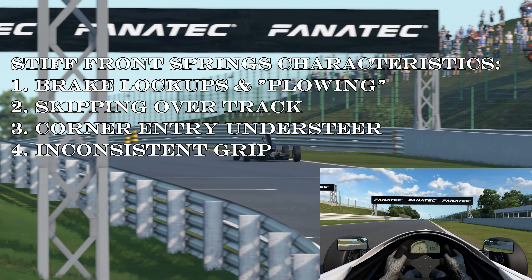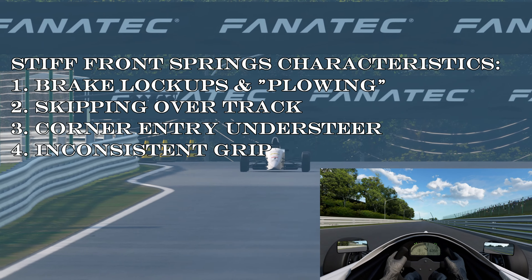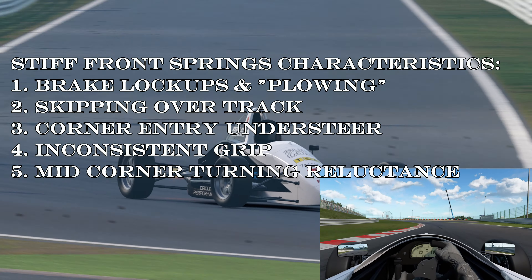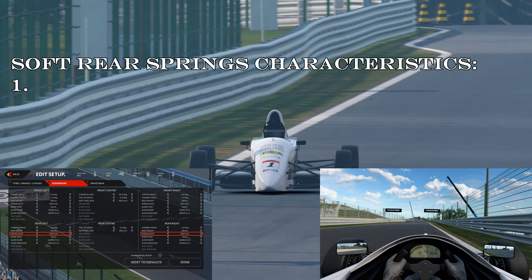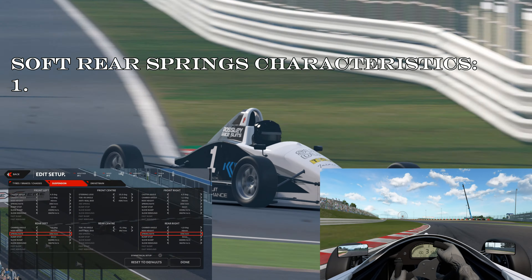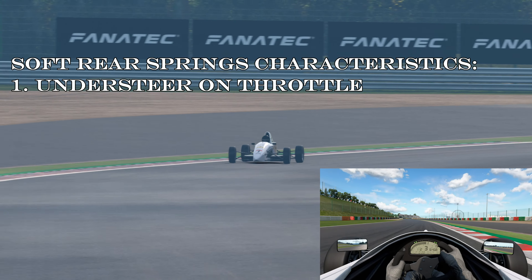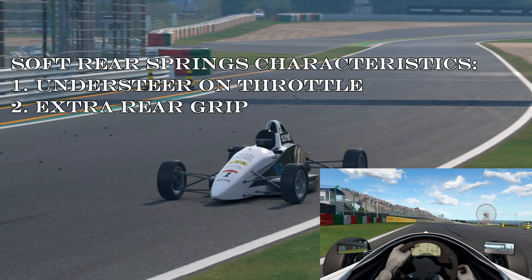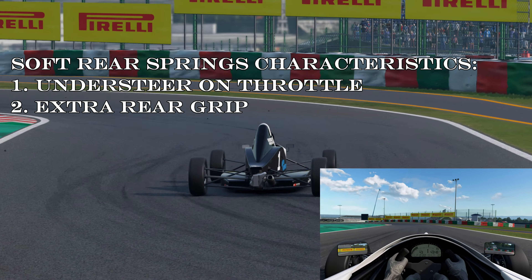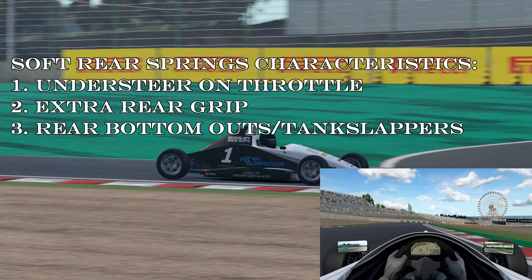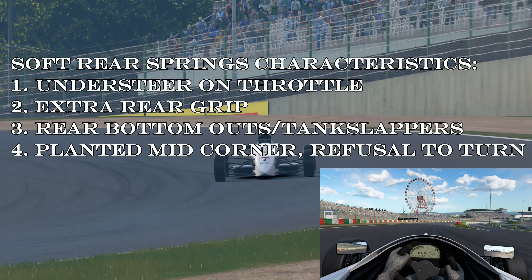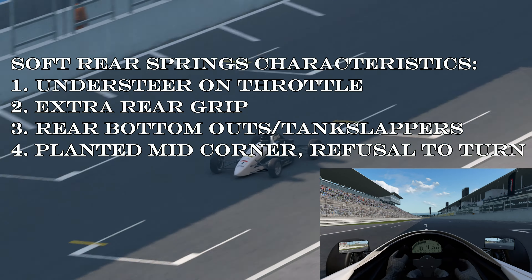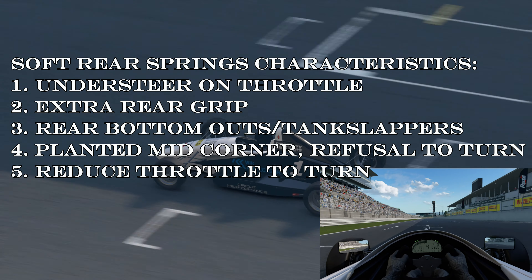If the car is prone to lockups on corner entry or has a tendency to understeer, the springs could be a setup adjustment you could try. Mid-corner, the car will be reluctant to turn. Soft rear springs mean the weight of the car will shift to the rear more gradually and controllably. This too can lead to understeer when applying the throttle. The car will have a tendency to grip up more effectively as the weight is cushioned and the springs are nicely gripping the track. On the other hand, this may lead to the car bottoming out in the rear. Mid-corner and on throttle application, the car will plant and more steering inputs will be required to turn the car. In the worst case, turning the car will not be enough and you may need to reduce throttle or brake to complete the turn.